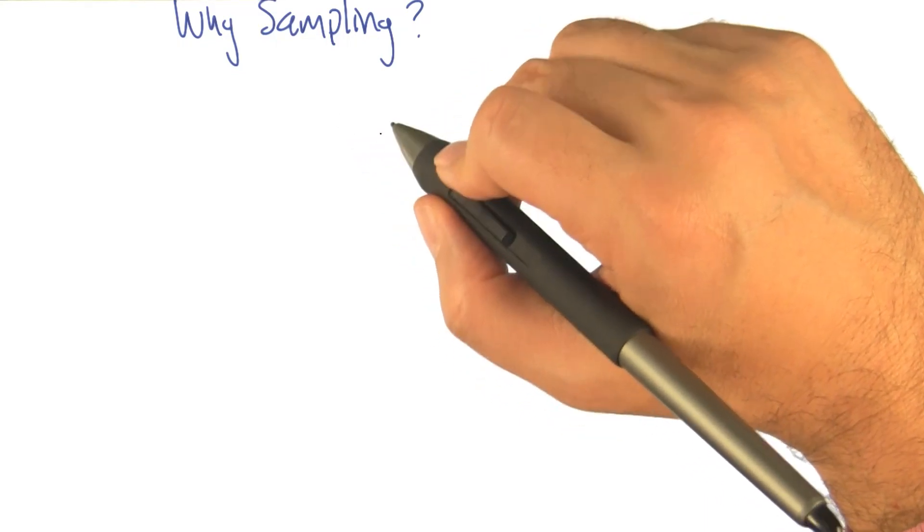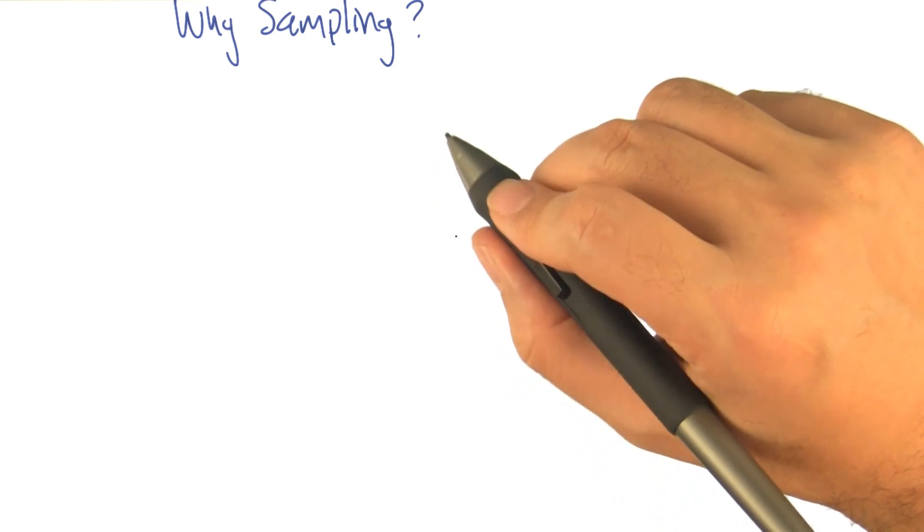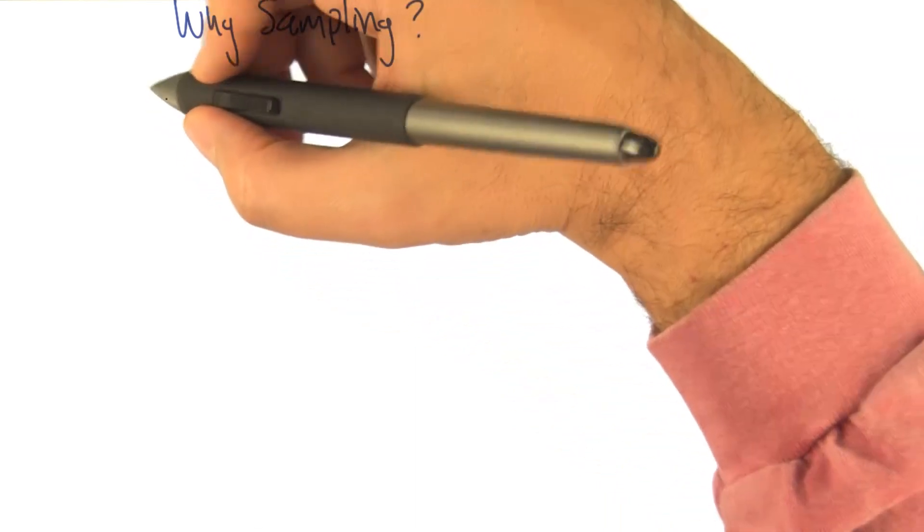Earlier I mentioned sampling and I asked you whether that sounded useful and you said it was. So let's do a little exercise. Why? Why is that a useful thing? Why is it a good idea to be able to sample from a distribution?